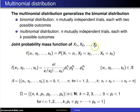To find the joint probability mass function of X1 up to XK, X1 is the number of type 1 outcomes, X2 is the number of type 2 outcomes, X sub K is the number of type K outcomes. F of X1 up to XK is the probability X1 equals X1, X2 equals X2 up to XK equals XK.